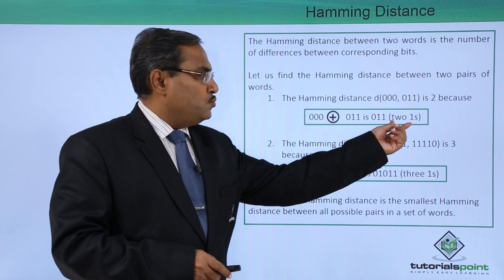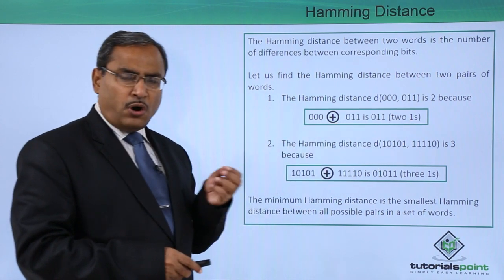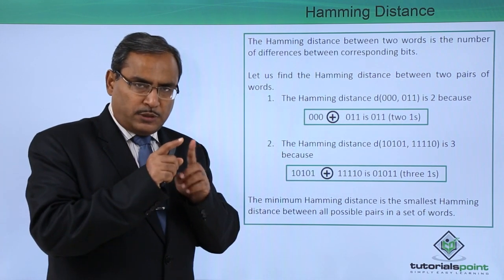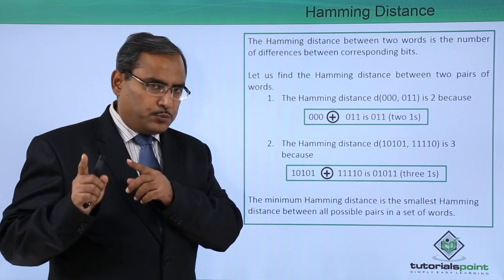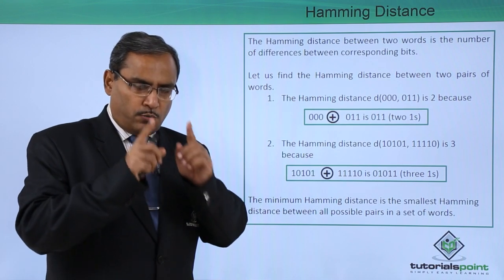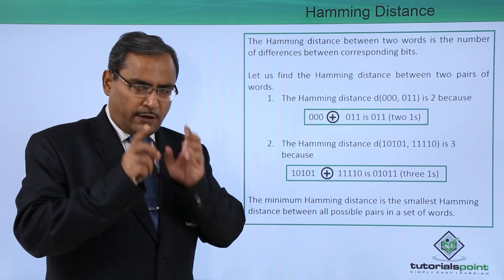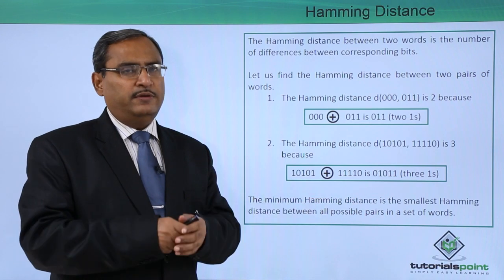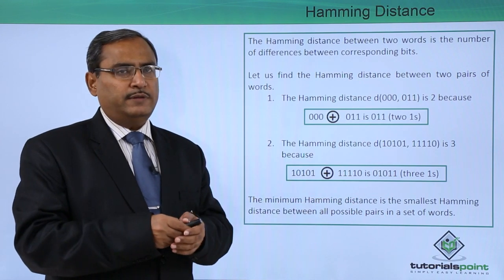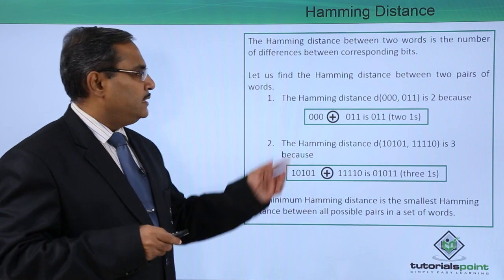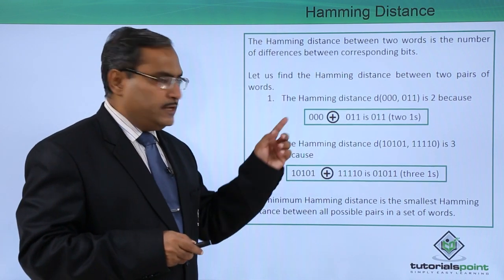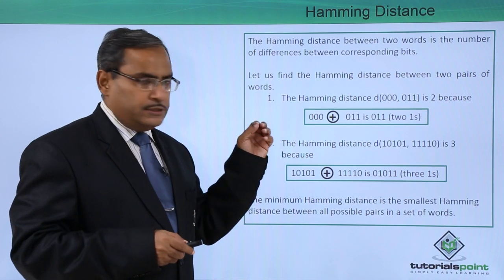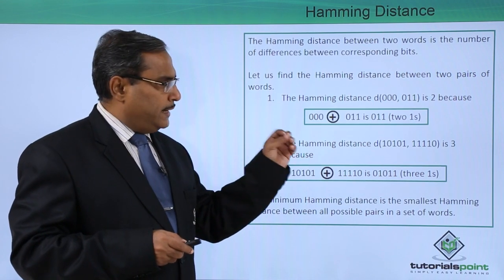If you go on taking the XOR, the opposite bits will produce output 1. Counting the number of ones after getting the XOR of these two words will give you the idea of the Hamming distance. So the Hamming distance D(000, 011) is 2.